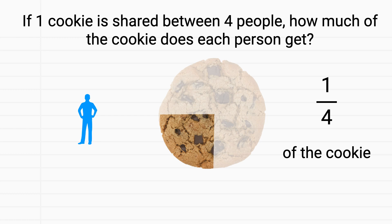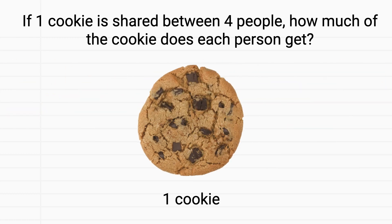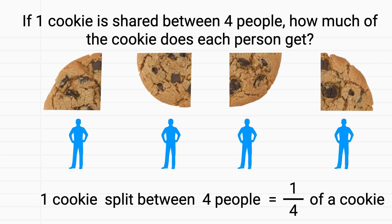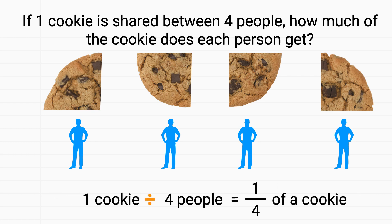So to recap: when we had one cookie and we split it between four people, each person received one-fourth of a cookie. In this problem, we were splitting something up between four people, and splitting something up can be represented with division. So we have the equation that one cookie divided by four people gives us one-fourth of a cookie each.